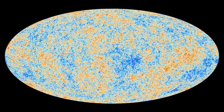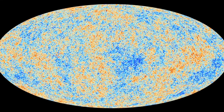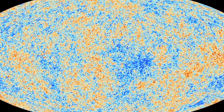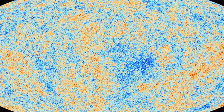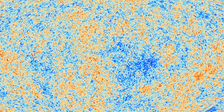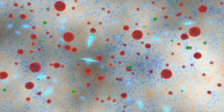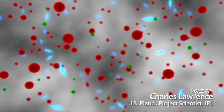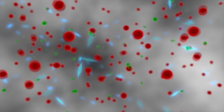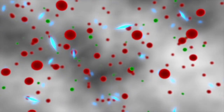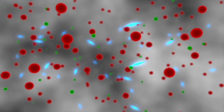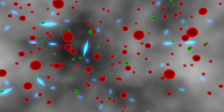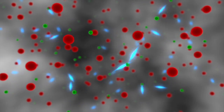Just 370,000 years after the universe began in a big bang, all that existed was a hot plasma similar to a candle flame. Protons and electrons, seen as the red and green balls, were bouncing around scattering the light. The particles of light, called photons, shown in blue, couldn't go far without colliding with an electron.